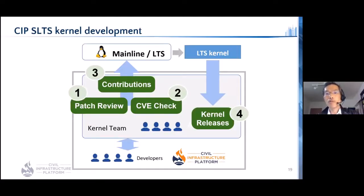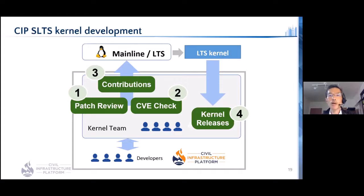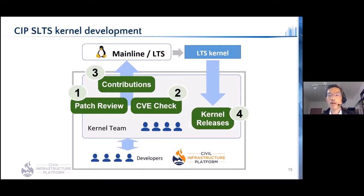What does upstream first mean for the CIP kernel team? Our upstream is Linux's mainline and stable releases. By the upstream first principle, only patches already in the mainline or stable kernels are allowed to be incorporated into CIP kernel releases. CIP members upstream their preferred code, and once the code is incorporated into mainline or stable kernels, it is allowed to be backported into CIP kernels. The CIP kernel team also takes actions from a different perspective: one objective is to maintain CIP kernels safe and sound.